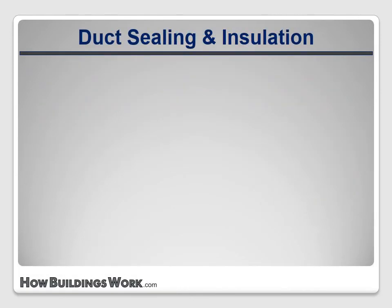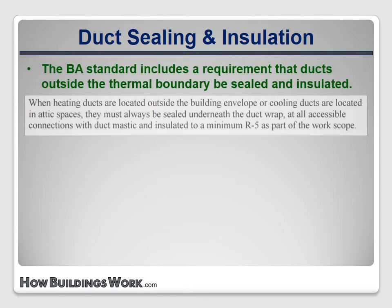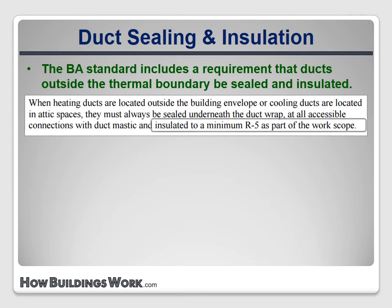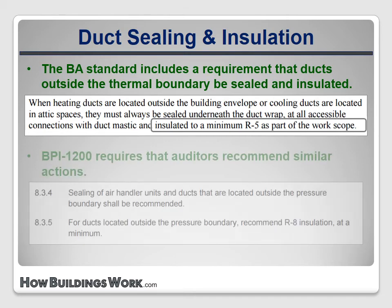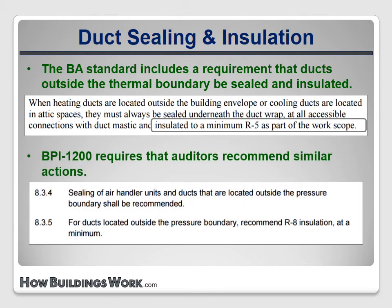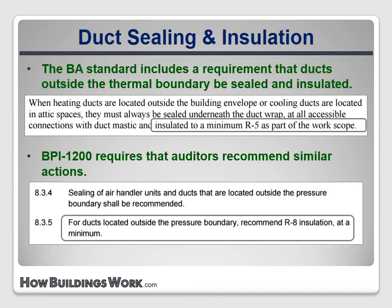Both standards address insulating ducts that are outside the thermal envelope with similar statements. But the BA standard requires that they must be insulated to a minimum R-5 as part of the work scope, while BPI-1200 says that for ducts located outside of the pressure boundary, recommend R-8 insulation at a minimum.